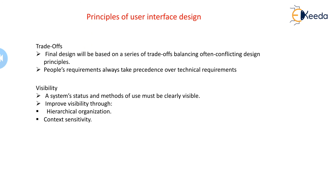Finally, there is visibility. Systems are most usable when they clearly indicate their status, the possible actions that can be taken, and the result of actions once performed. Hierarchical organization places information and controls into logical categories, hiding them under parent controls — the category name remains visible but information remains hidden until activated. Context sensitivity means presenting and hiding information and controls based on the existing system context, and the degree of visibility should correspond to the relevance of the information. This concludes the principles of user interface design.